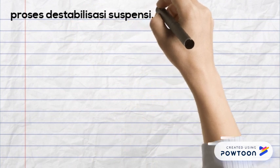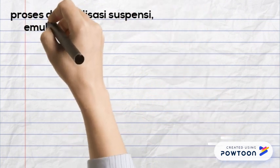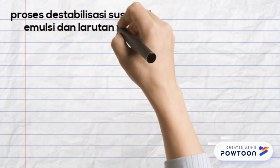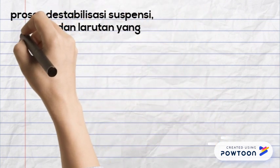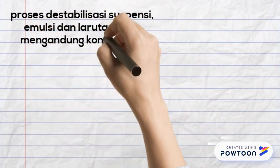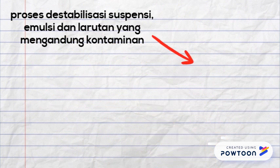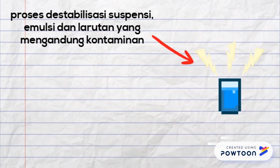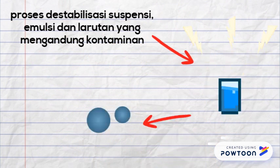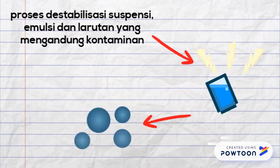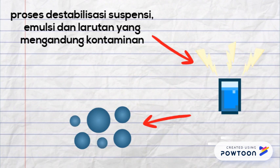Elektrokoagulasi juga merupakan proses destabilisasi suspensi, emulsi, dan larutan yang mengandung kontaminan. Dengan cara mengalirkan arus listrik melalui air, dapat menyebabkan terbentuknya gumpalan yang mudah dipisahkan.